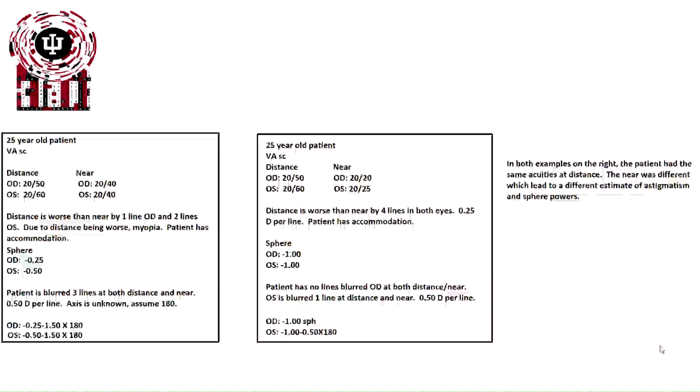Now let's look at the patient on the right. In this situation, the distance acuities are exactly the same as our first patient. They're 20/50 and 20/60. However, at near, the right eye sees 20/20 and the left eye sees 20/25. Distance is worse by four lines in the right eye and both eyes at a quarter diopter per line, so our sphere powers now are minus one minus one.